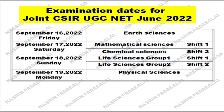For Earth Sciences, Mathematical Sciences, Chemical Sciences, and Physical Sciences, they will be writing the exam in a single shift because total applicants for Physical Sciences, Mathematical Sciences, and Earth Sciences range from 30,000 to 50,000, while Earth Sciences has only 7,000 to 10,000 students. Since fewer students apply for Earth Sciences, that is the reason why Earth Sciences exams are always scheduled first.